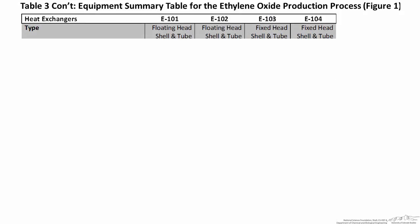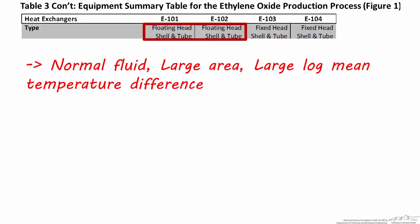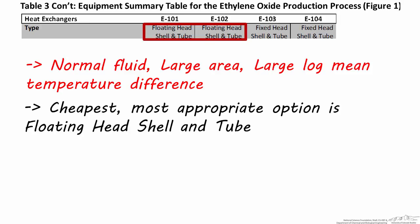For our ethylene oxide process, the streams are not particularly viscous, fouling, or corrosive, so I chose a combination of fixed head and floating head heat exchangers for E101 through E104. For E101 and E102, these are fairly high area heat exchangers, and there's a large difference in temperature between the process streams and the high pressure steam. This results in a log mean temperature difference of around 100 degrees centigrade, which is considered high. So it's a good idea to choose a floating head shell and tube for this application.